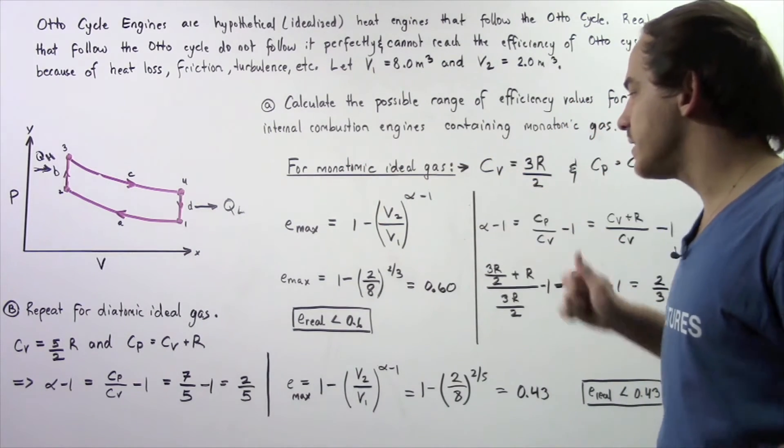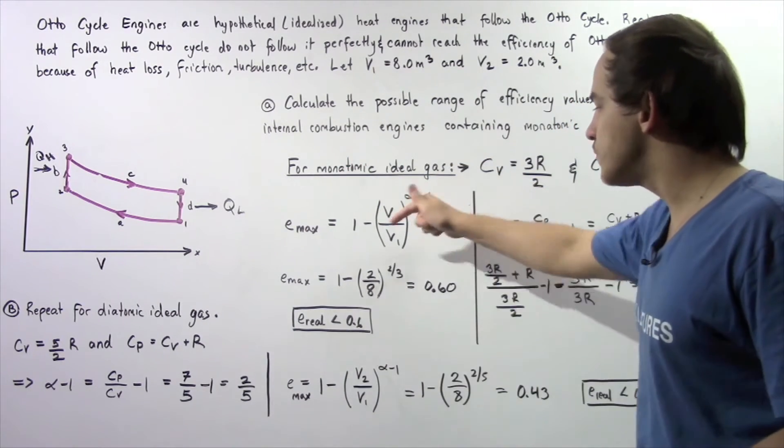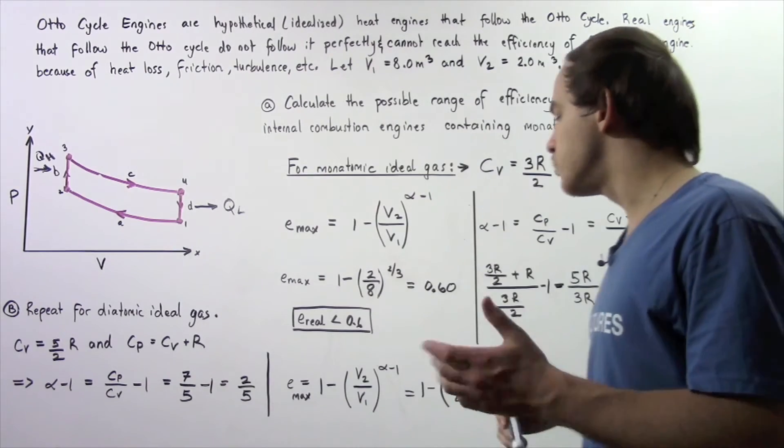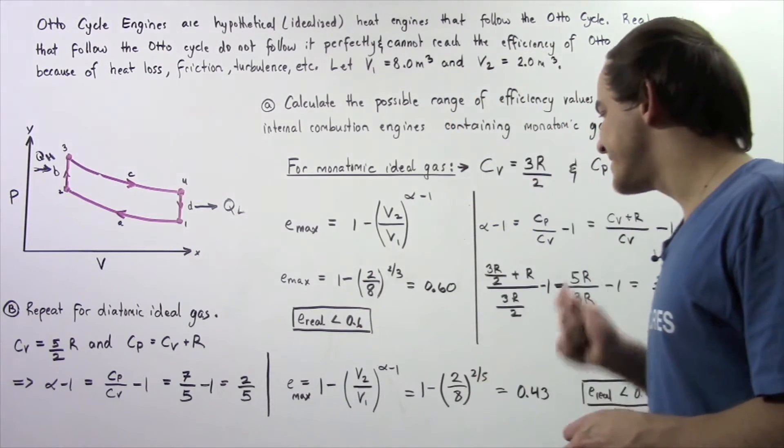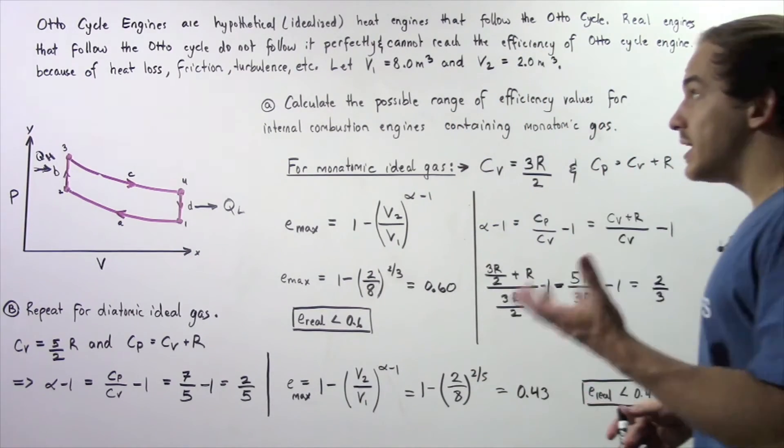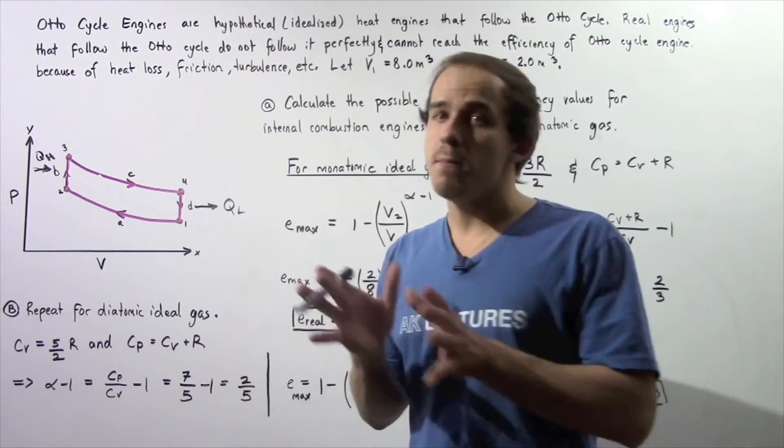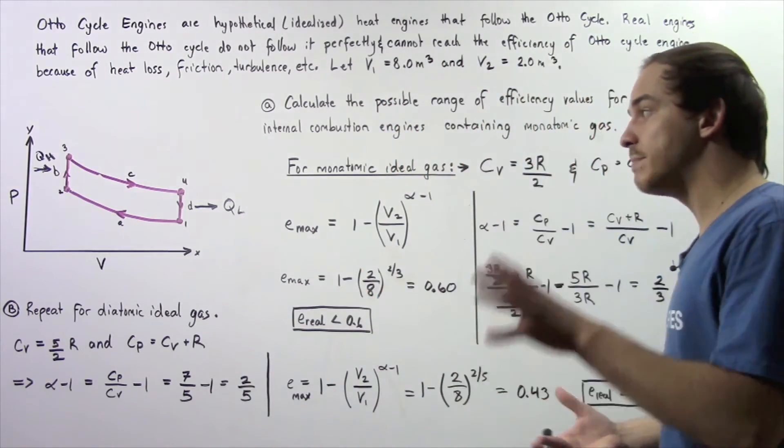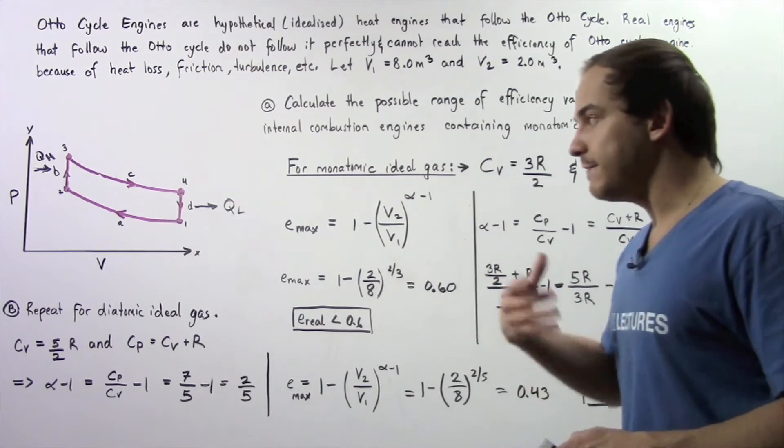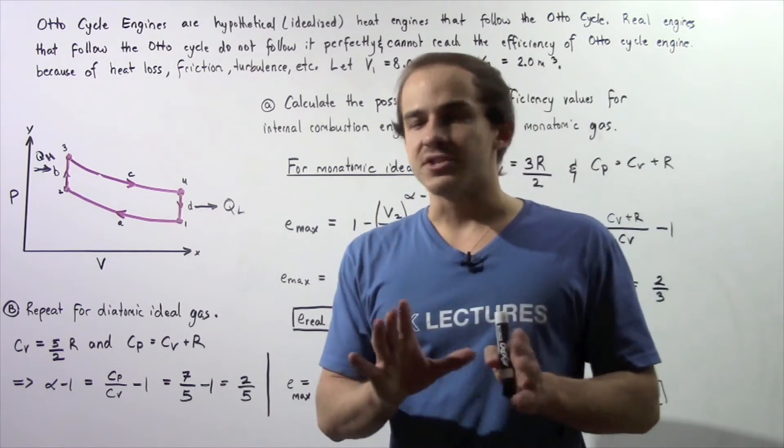1 minus 2 divided by 8 raised to the power of 2 thirds and that gives us approximately 0.6. Now because a real engine that obeys the Otto cycle doesn't obey it exactly, doesn't obey it perfectly, that means the efficiency must be less.